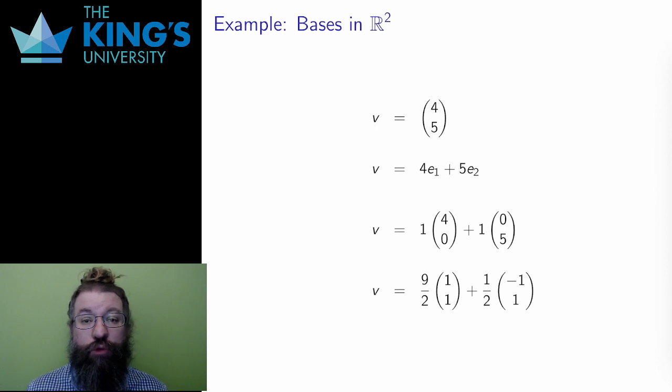Take a specific vector (4, 5). In terms of the standard basis, the axis vectors, v is equal to 4 times e1 plus 5 times e2. 4 units in the x direction and 5 units in the y direction.